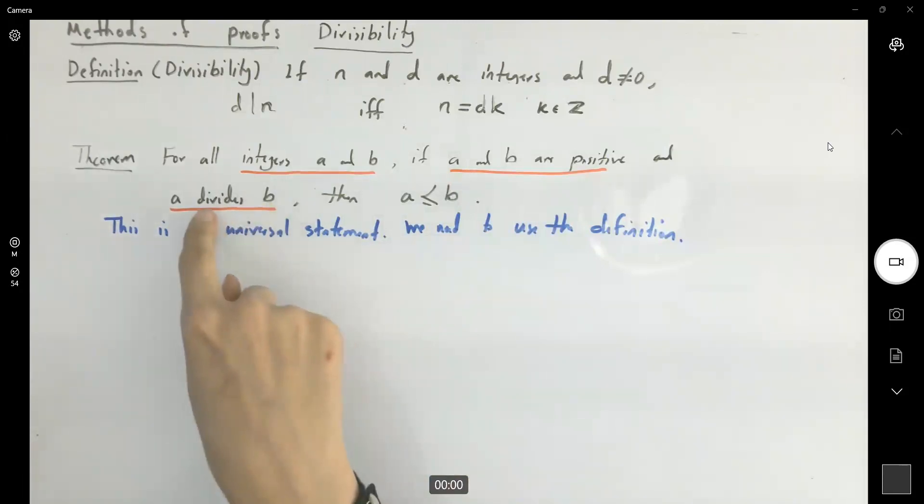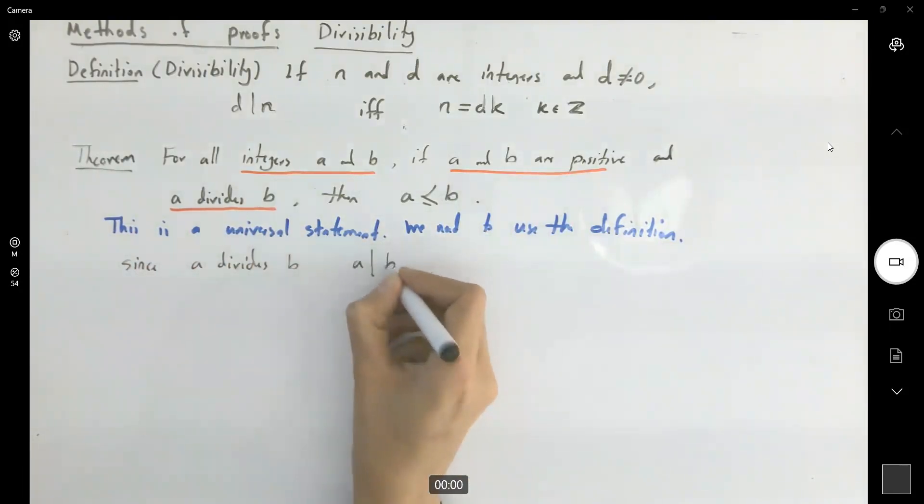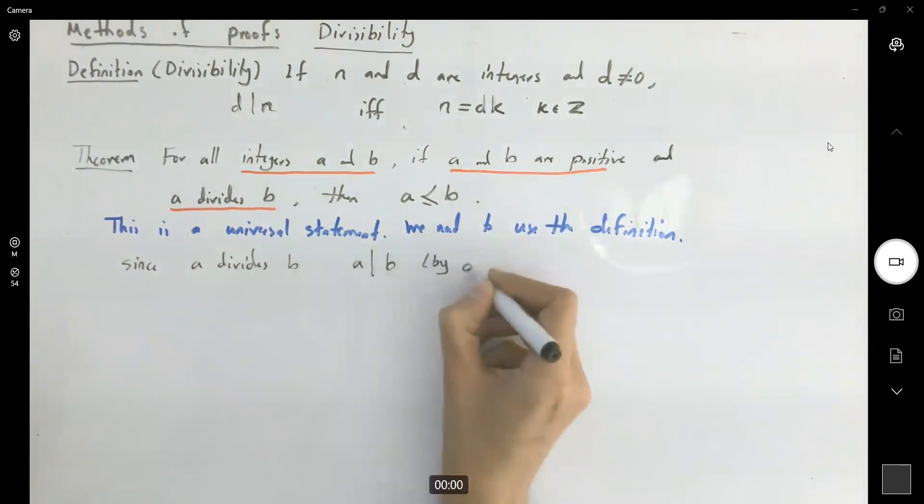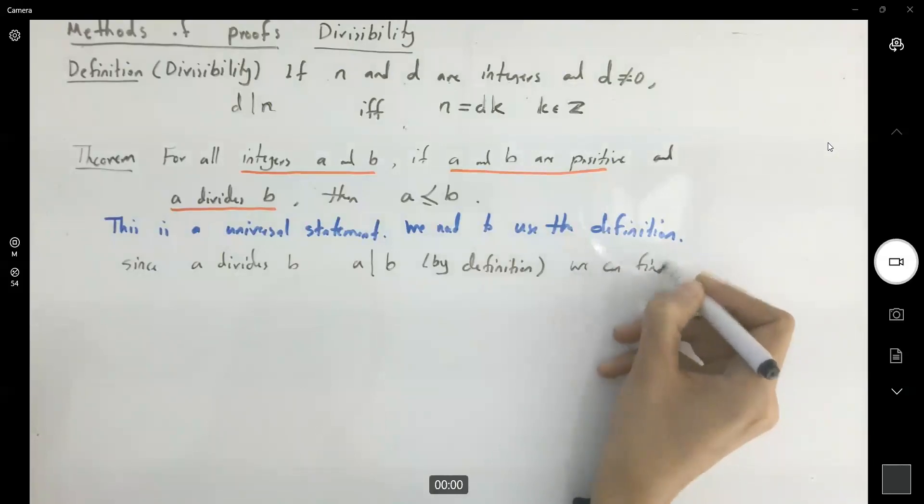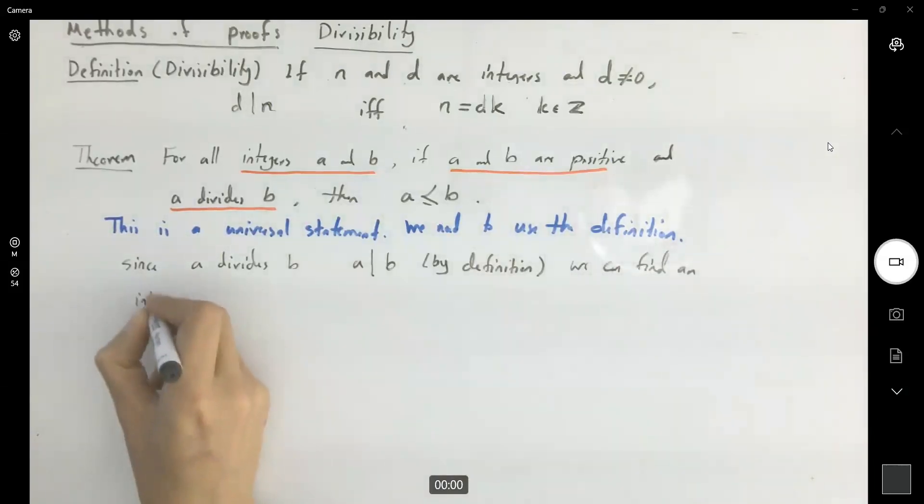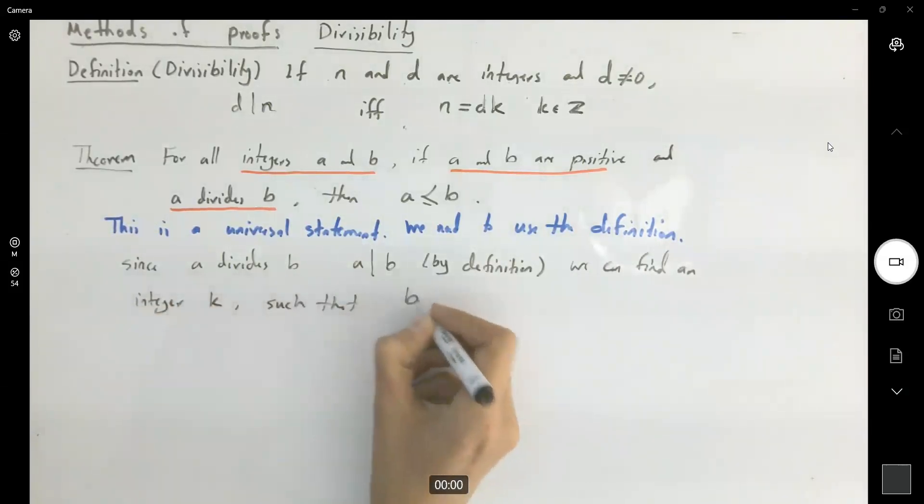Okay, so a divides b. It means that a divides b. By definition, we can find an integer like k such that b is equal to a times k. Okay, so far so good.